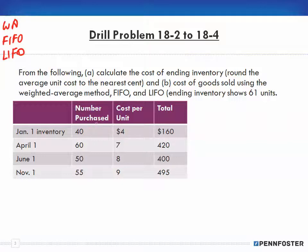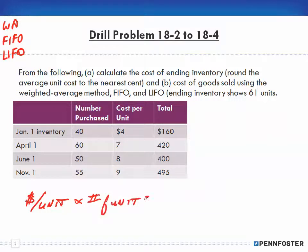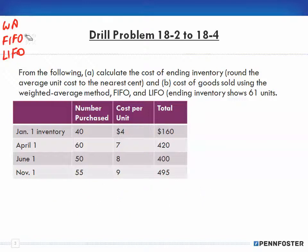Let's take the weighted average. Remember, with the weighted average we're going to get a cost per unit — a dollar per unit — and we multiply that by the number of units to get our inventory value. The problem says: from the following, A) calculate the cost of ending inventory, rounding the average unit cost to the nearest cent; B) the cost of goods sold using the weighted average method, FIFO, and LIFO. Our ending inventory is going to show 61 units.